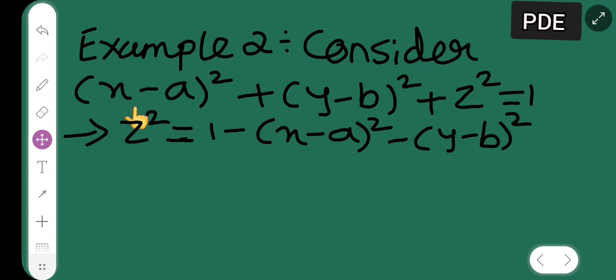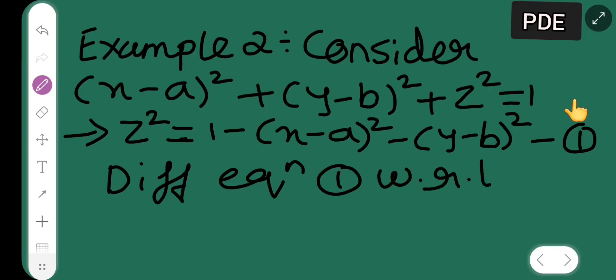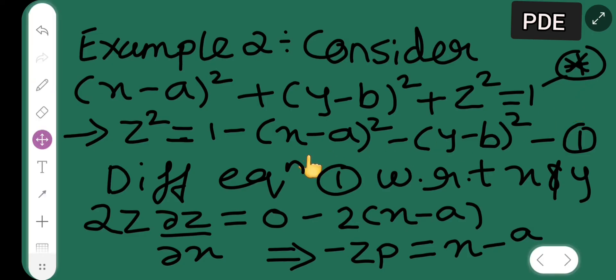What I have done here is kept z² as it is and taken the other terms to the other side, so it becomes z² = 1 - (x - a)² - (y - b)². Consider this as equation 1, also referred to as star. Now I have to differentiate this equation with respect to x and y.